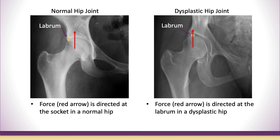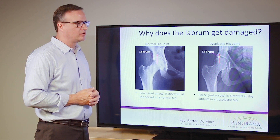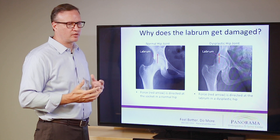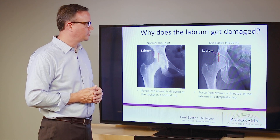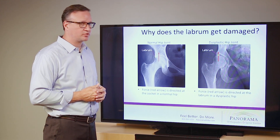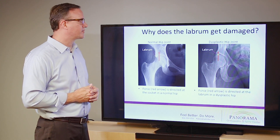On the right side, someone with dysplasia has their socket tipped so much that the ball actually loads on the edge of the cup — and that yellow dot is where the labrum is. Most young people present with a labral tear because the ball has been sitting on the labrum. They often present just after puberty or in high school when they get bigger physically and start doing athletics, loading the hip joint with impactful activities.